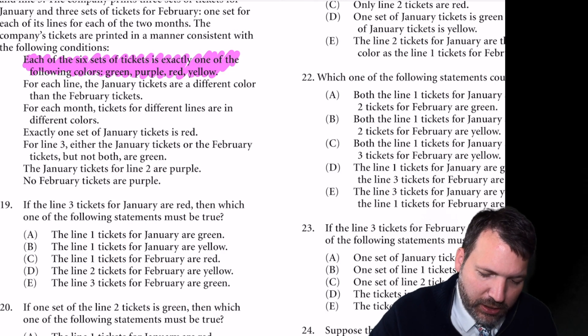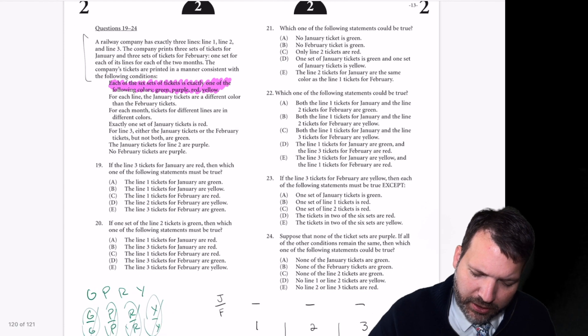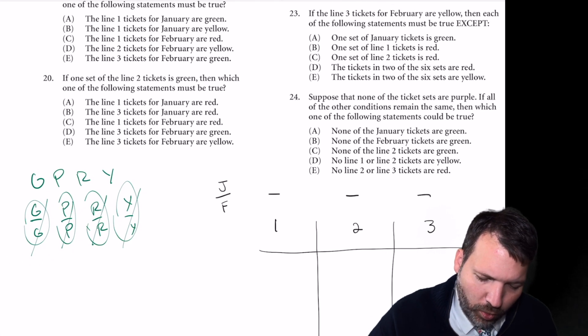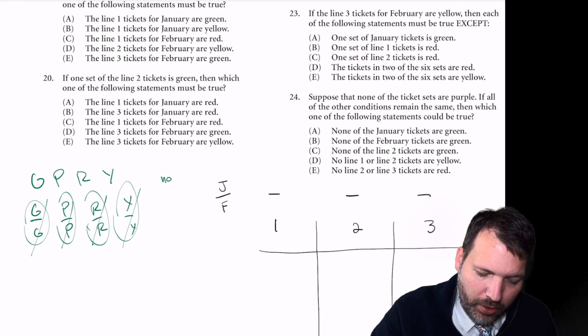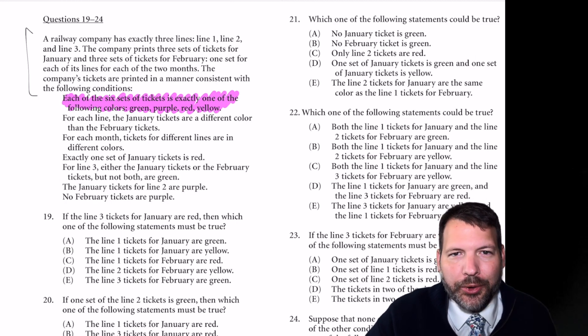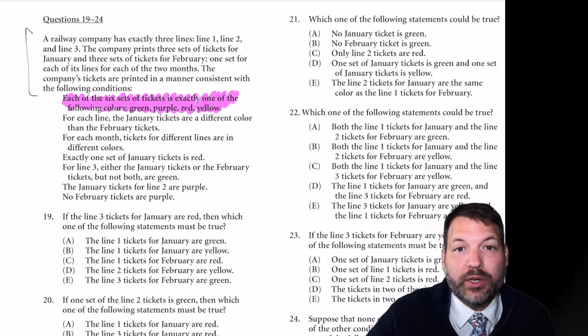For each month, tickets for different lines are in different colors. I think that means we can only use each color once on top and bottom. I'm just going to jot down, there's not a great way to symbolize this, no colors more than once. And that's going to be true on top and bottom. We don't love it when we just have to kind of write a note down because the whole point of symbolizing clues is that we don't have to refer back to words.